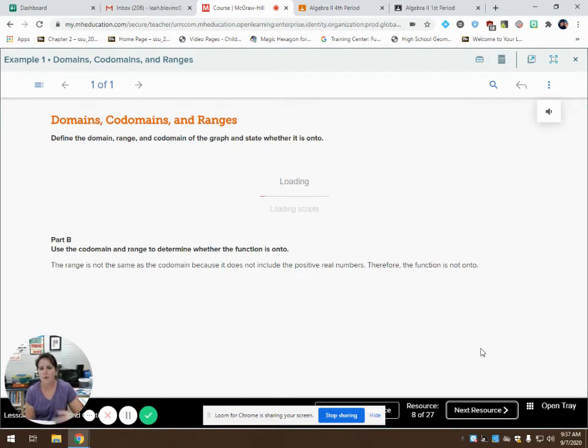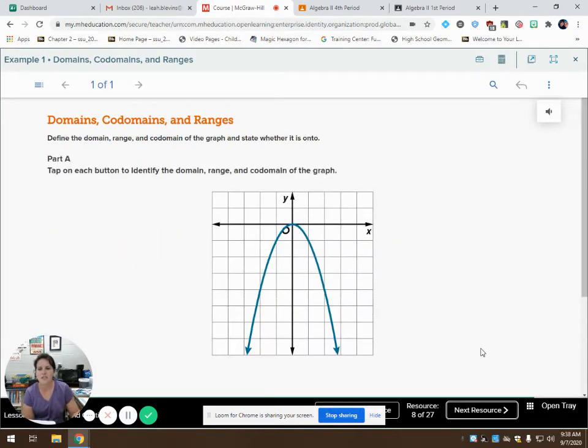So once again, I'm going to load this problem. I would like for you to take a moment to pause the video and try to answer this. So to define the domain, the range, and the codomain of the graph and state whether it is onto. So you're probably thinking, what? What world is onto in this sentence? We're going to talk about it.